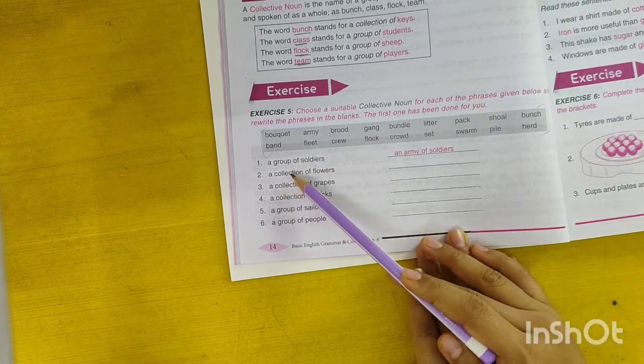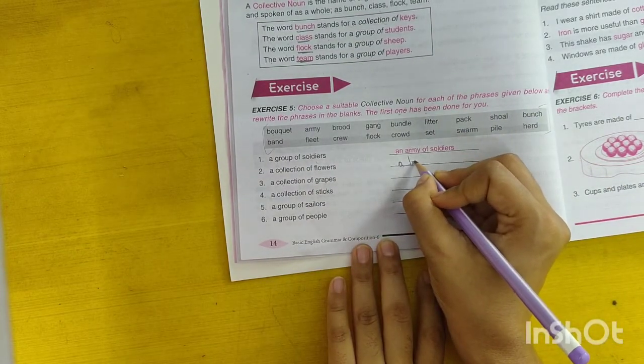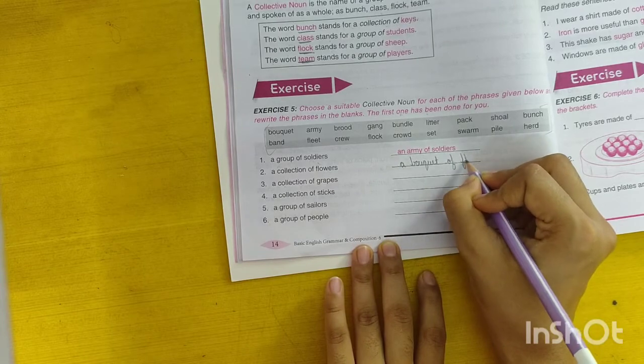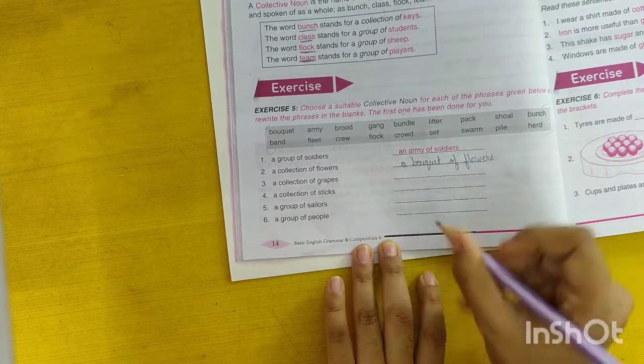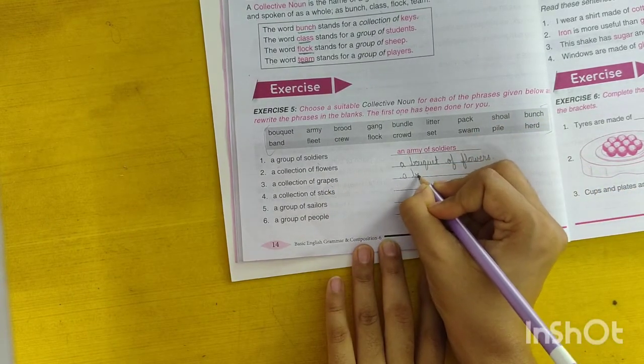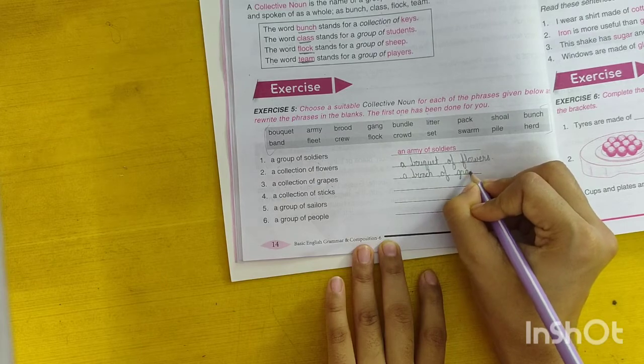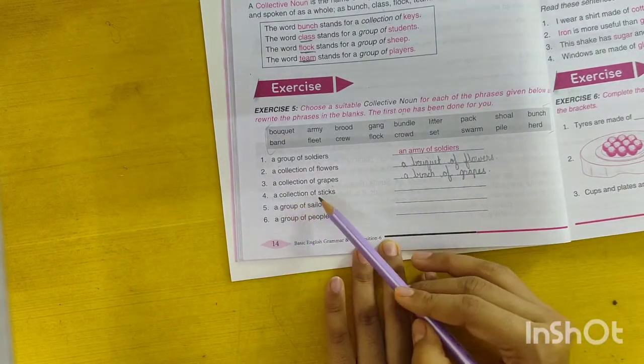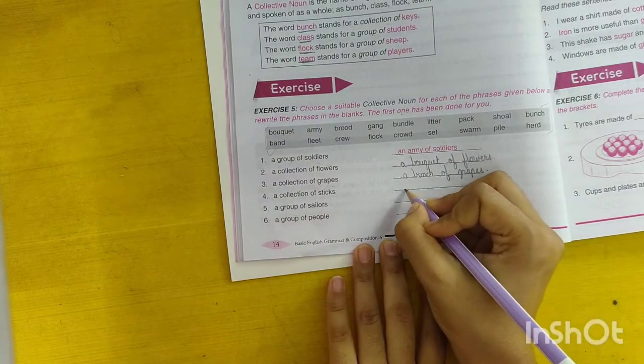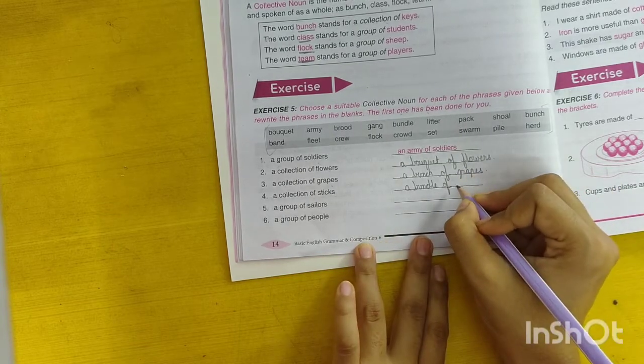A collection of flowers, a bouquet of flowers. A collection of grapes, a bunch of grapes. A collection of sticks, a bundle of sticks.